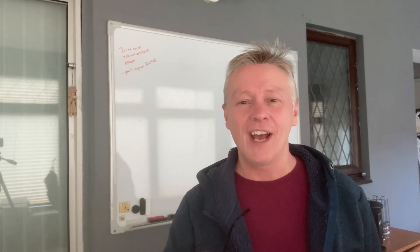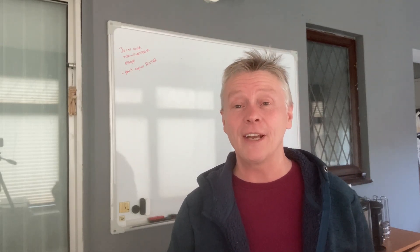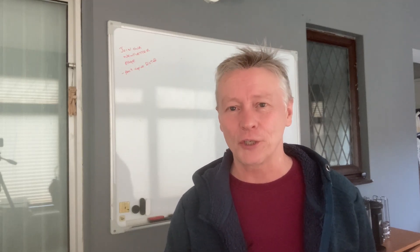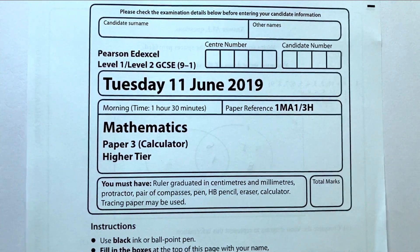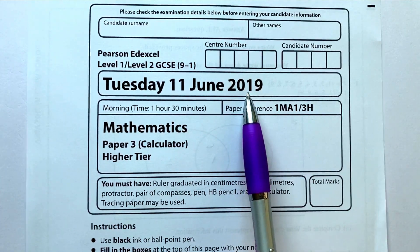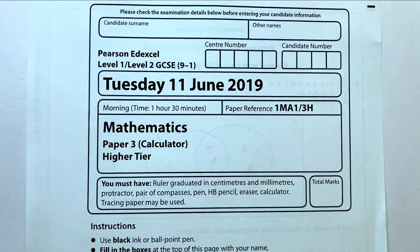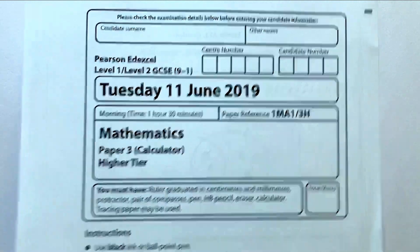Hi, in this series of videos we're going to be working through a GCSE paper. Please do stop the video and have a go at each of the questions, then compare your solutions. Each video is going to be about 20-30 minutes, giving you about an hour's worth of focused revision. This is the third video where we're looking at the June 2019 Edexcel Maths Paper 3 for the higher tier. On the previous video we completed through to question 20, so we're going to start from question 21 onwards.